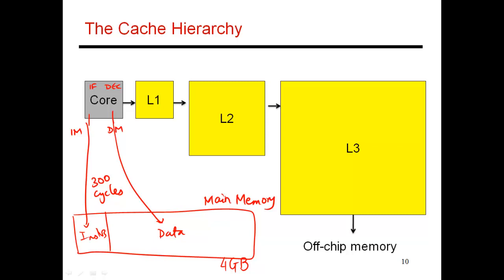So instead what is done is a small portion of this really large main memory is saved on the processor chip. And this is where the caches come in. So the caches are implemented as this multi-level hierarchy that I'm showing in this figure.